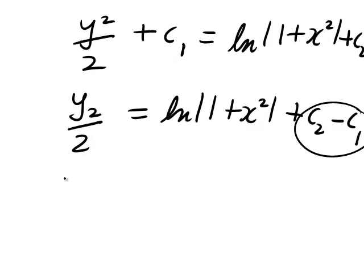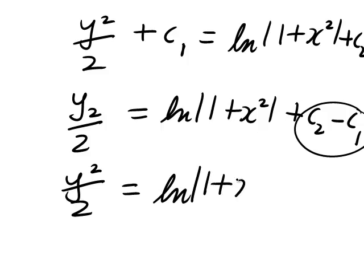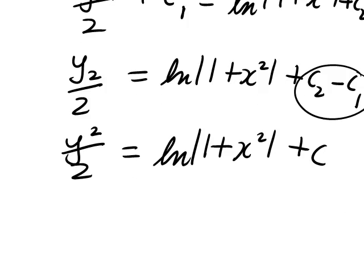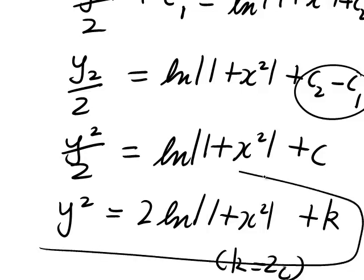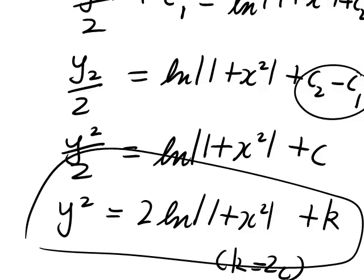So y² divided by 2 equals ln|1 + x²| plus c. And finally, we can multiply both sides by 2 to get a solution of the form y² equals 2 ln|1 + x²| plus a constant k, where k is equal to 2c. And so this would be the solution of our differential equation.